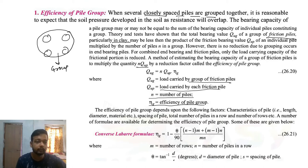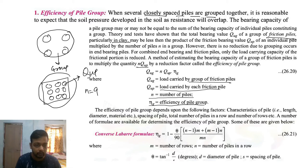That means, say here are nine piles, so n equals 9. One pile's ultimate load carrying capacity is Q_up, so for the total it is Q_ug. Tentatively, Q_ug equals n times Q_up, where n is 9 and Q_up is for one pile. And this is the efficiency.